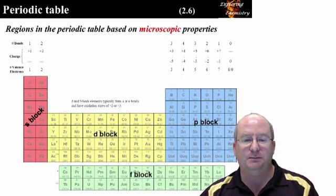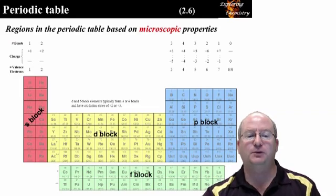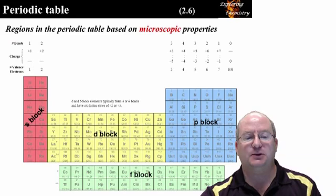Note that many of the P block elements have a range of possible charges. After completing chapter 7, we will be able to explain why these trends exist, and be able to predict the charges a given element will have within a range.